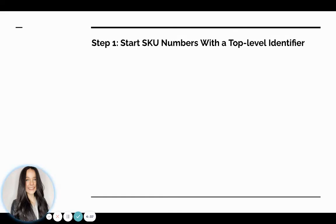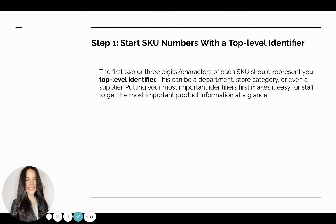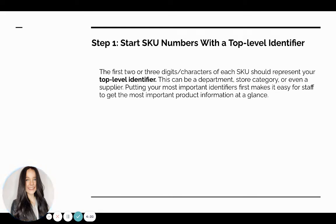The first thing you're going to want to do is start your SKU number with a top-level identifier. This means the first two or three digits of your SKU numbers are going to indicate what you have decided is the most important thing that you want your employees or yourself to be able to see about a product at a glance. That could be a store category, a store department, a supplier, a color, a size — whatever makes sense for your products.